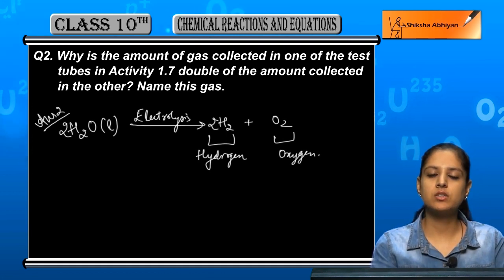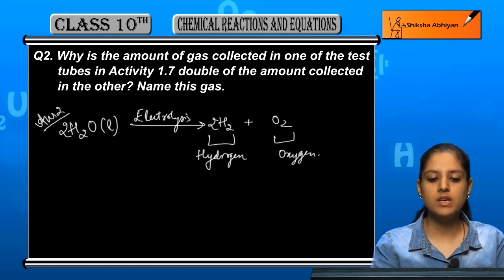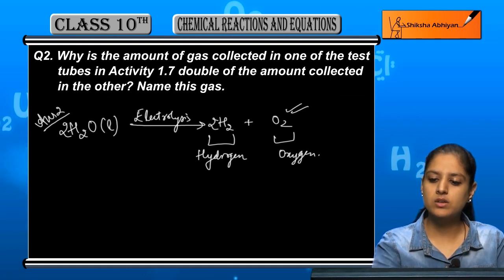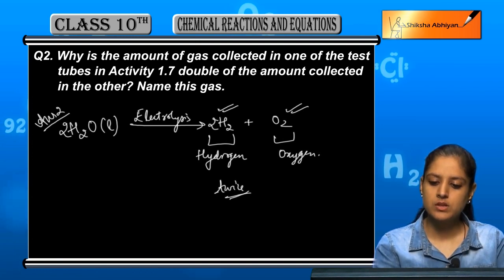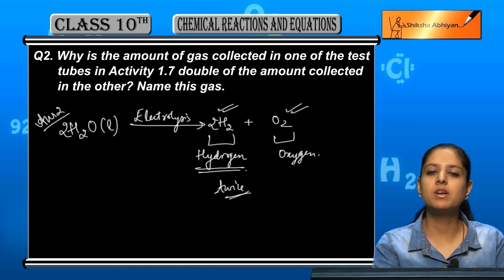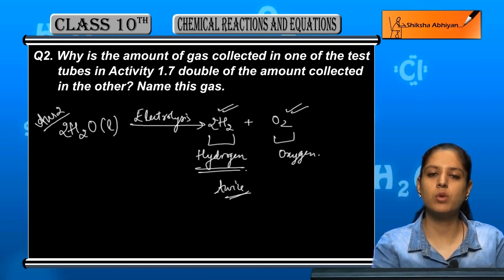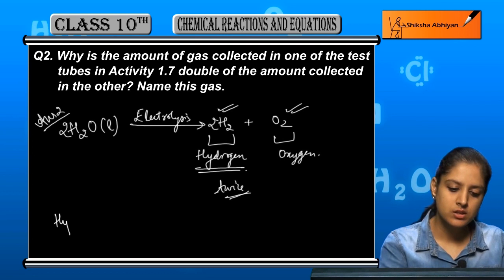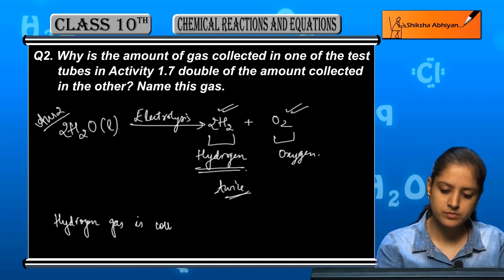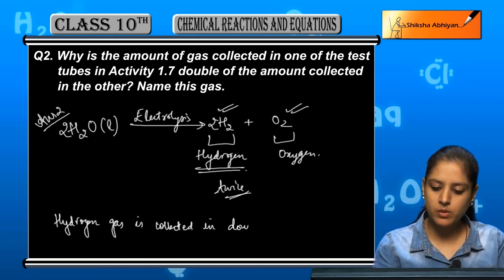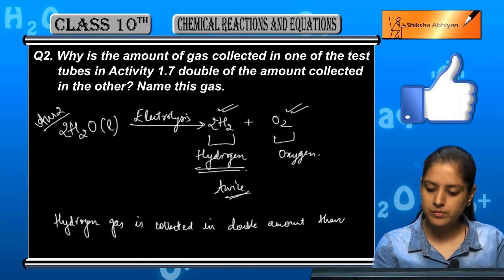Now the question is, during this electrolysis when you have two test tubes, in one test tube why is double the gas? You can see from the equation where there is O2, there is 2H2. So hydrogen gas is collected in double the amount than oxygen.